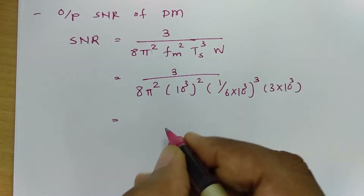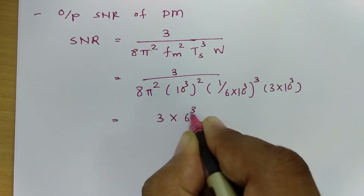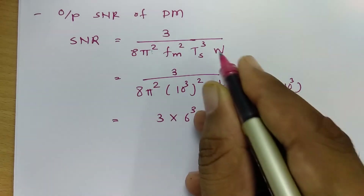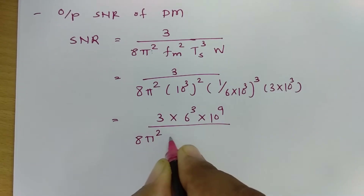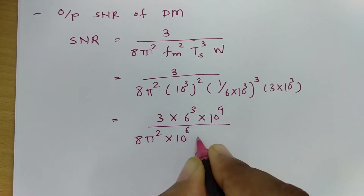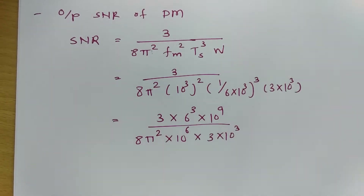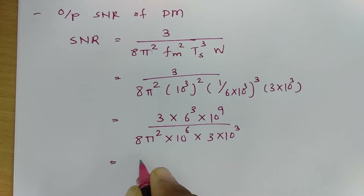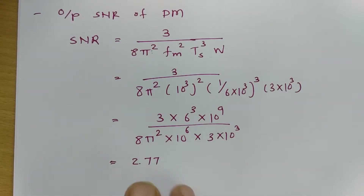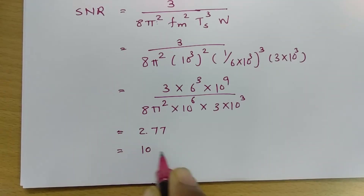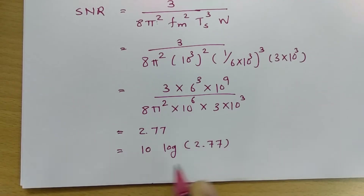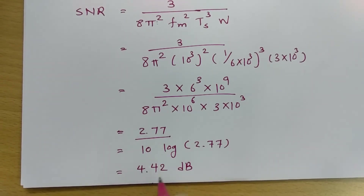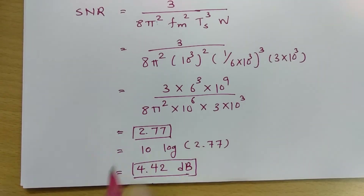Simplifying the expression: the numerator becomes 3 × 6³ × 10⁹, and the denominator is 8π² × 10⁶ × 3 × 10³. Solving this gives a value of approximately 2.77. To convert to dB, we calculate 10 log(2.77), which gives an SNR of approximately 4.42 dB. So the SNR magnitude is 2.77 and in dB it is 4.42 dB.